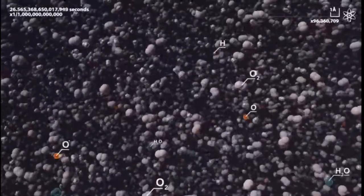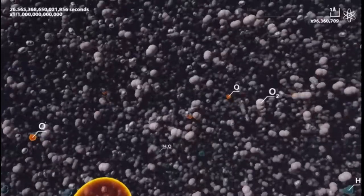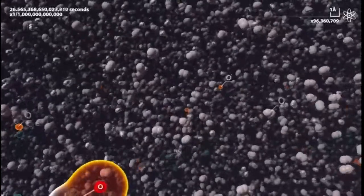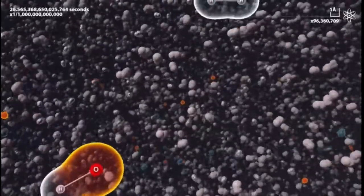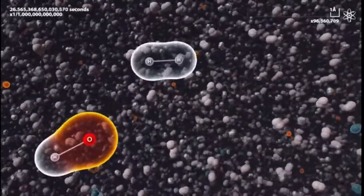In normal molecules, all electrons sit in pairs. But radicals have unpaired electrons. They want to find a pair for their lonely electron. That makes them ideal for reacting with other particles. Here's how it happens.